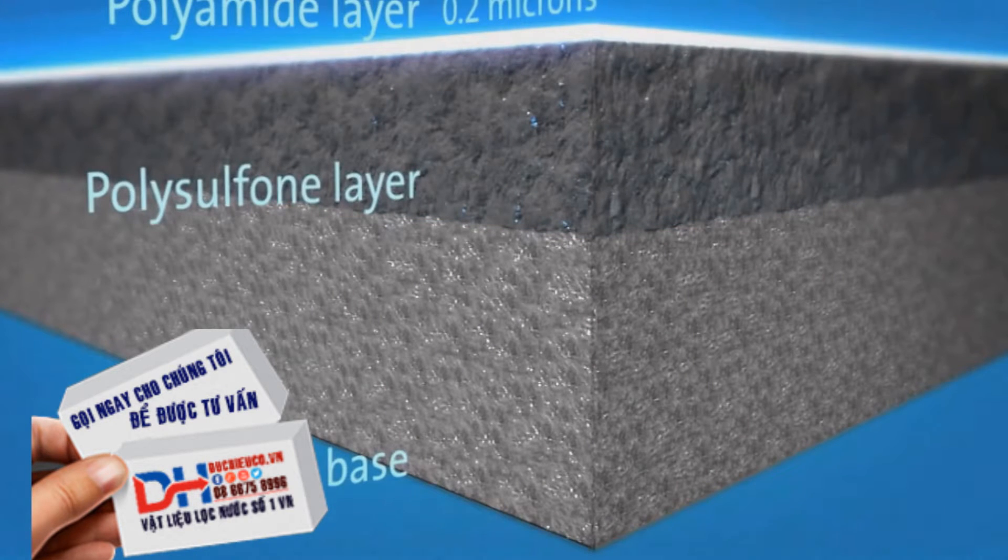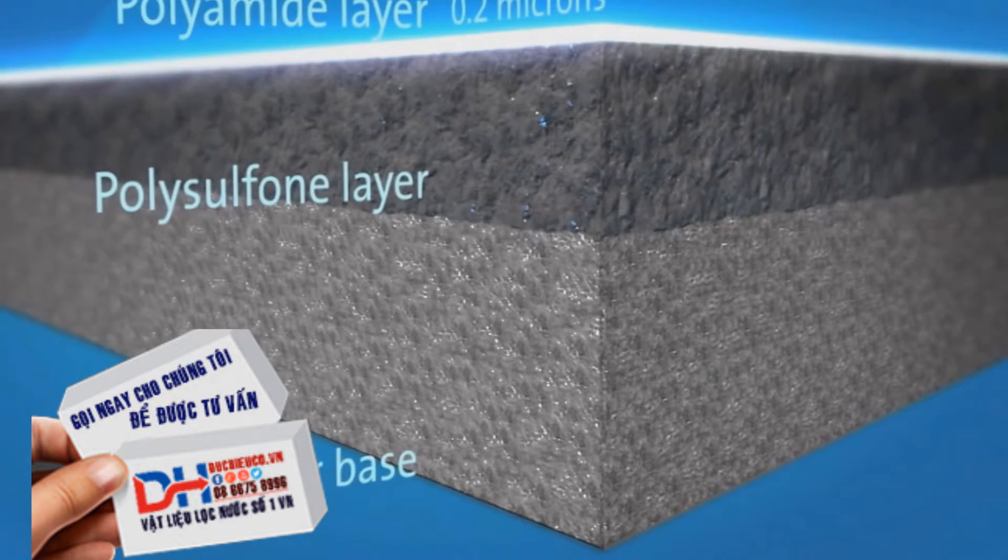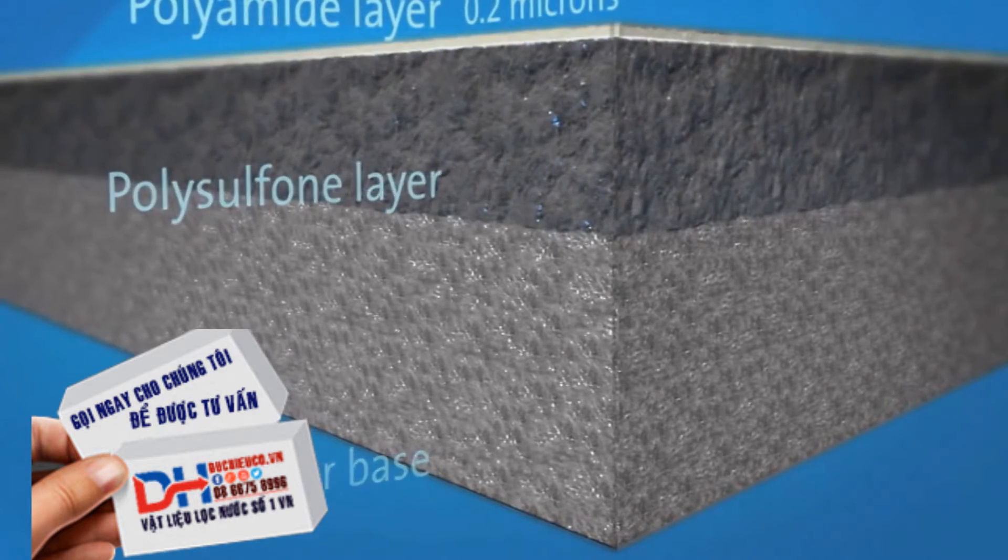The polysulfone layer strengthens the very thin barrier layer. It is the barrier layer that removes nutrients, chemicals, bacteria, and viruses from the water.